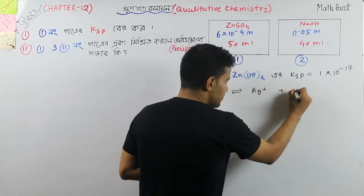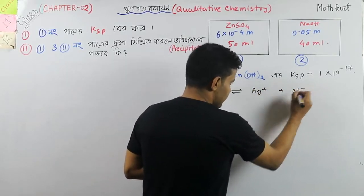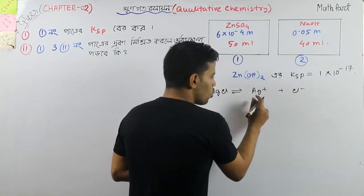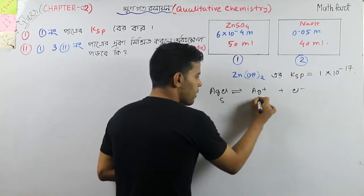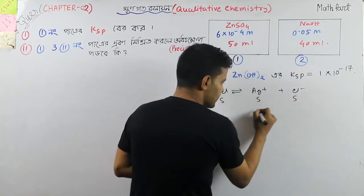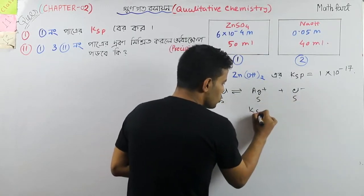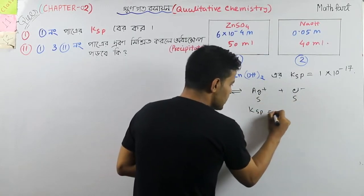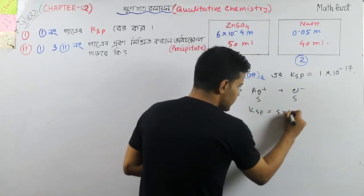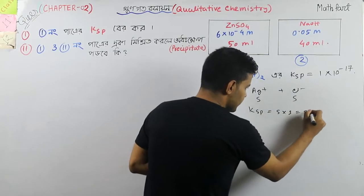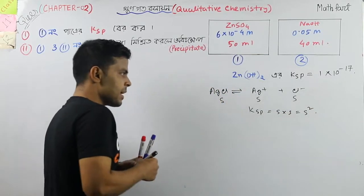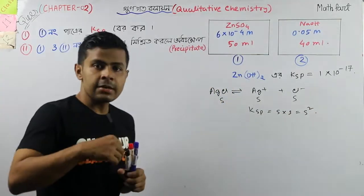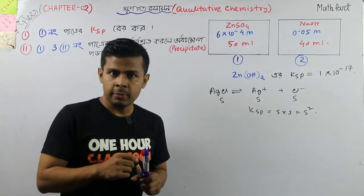So here we have A plus Cl minus. That's another time we see it as S plus S. That we also use the Ksp — S into S which is S squared.